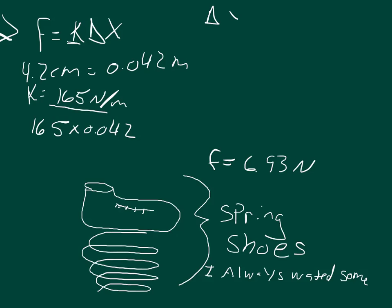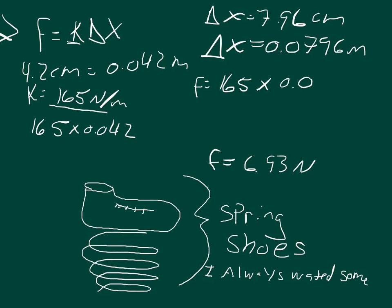The only thing that changes is delta x. It tells us it changes to 7.96 centimeters. So delta x is equal to 0.0796 meters. So we can just set that up as F equals 165 times 0.0796. And so the force is equal to 13.134 newtons.